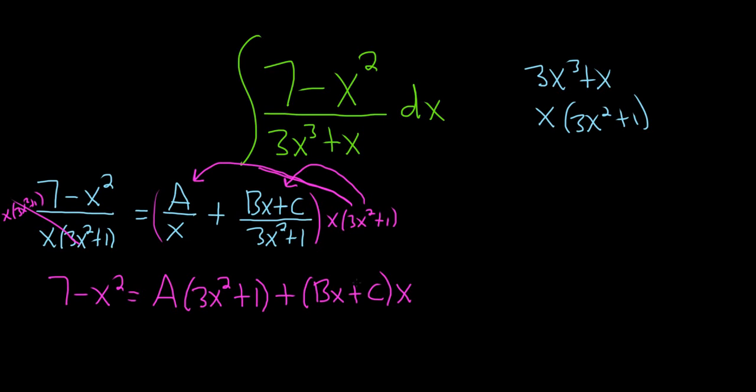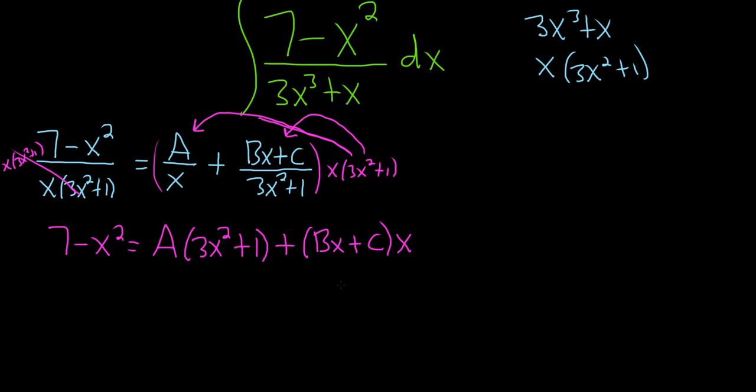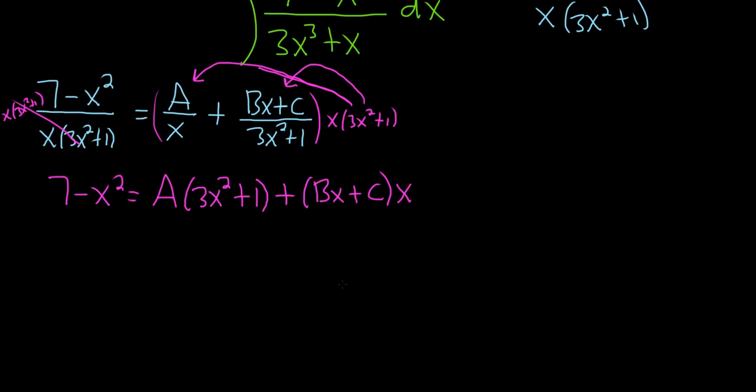Okay so now we're in this position here. So whenever you get to this position in partial fractions the easiest thing to always do is ask yourself: what can I plug in that will make things go away and will let me solve for one of the variables? Then you just keep doing that until you can't. And then when you can't you resort to something called equating coefficients.